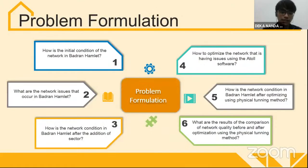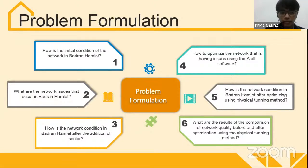In the problem formulation, the first question is: what is the initial condition of the network in Quadrant Hamlet? Second, what are the network issues that occur in Quadrant Hamlet? And third, what is the network condition in Quadrant Hamlet after sector addition?